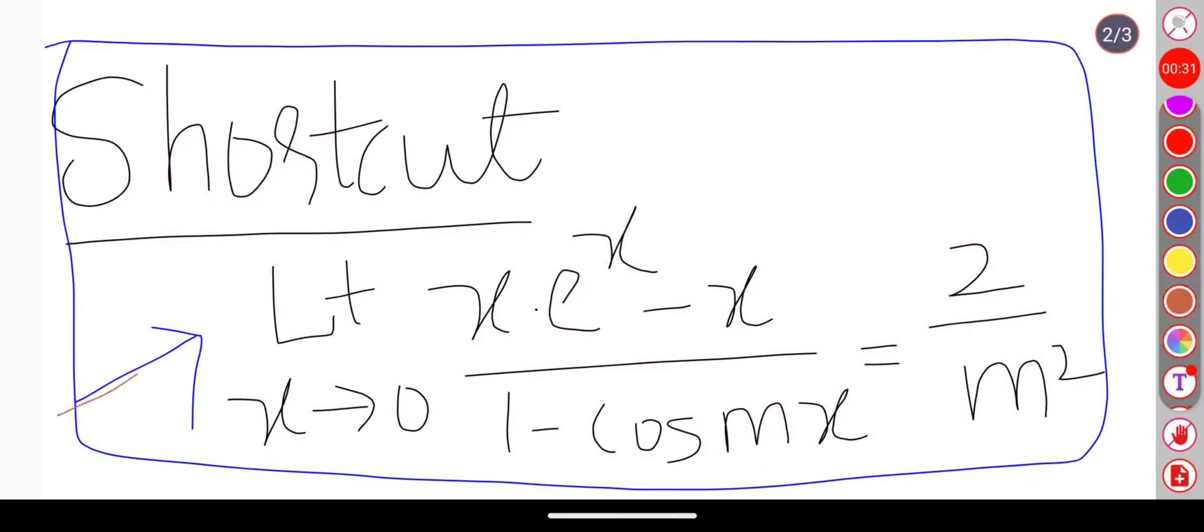is limit x tends to 0, x e to the power x minus x by 1 minus cos mx, which is 2 by m squared. Using this shortcut formula we can solve this value.